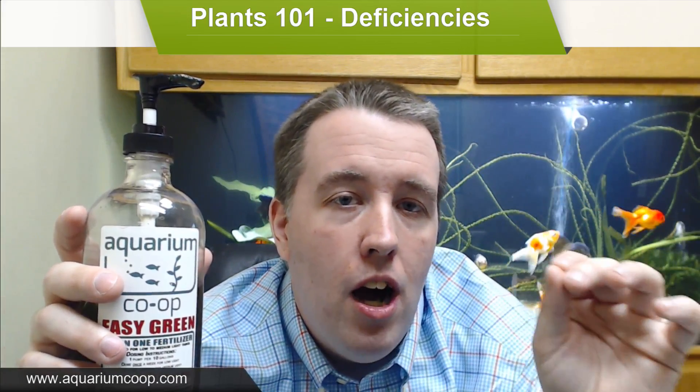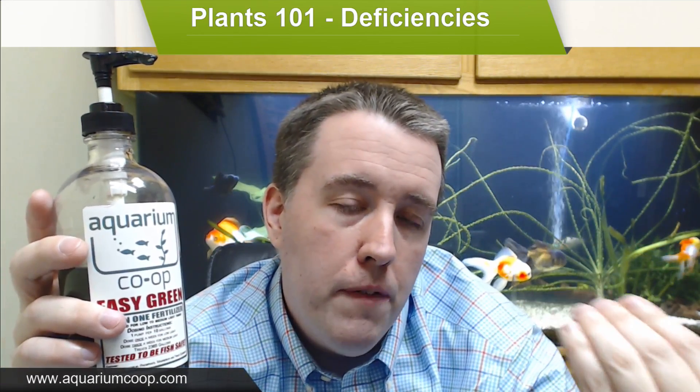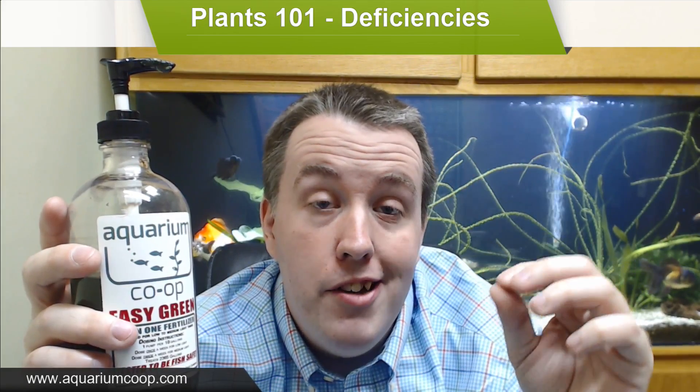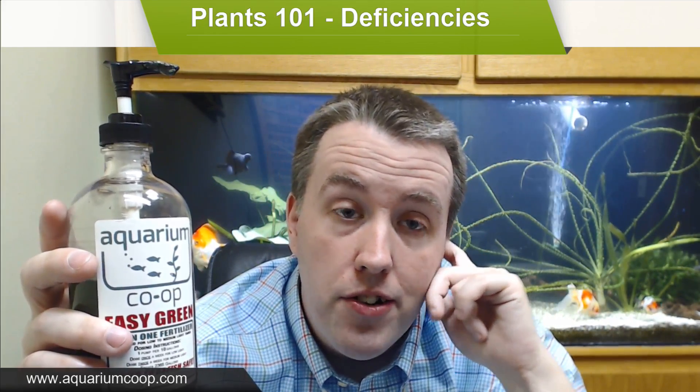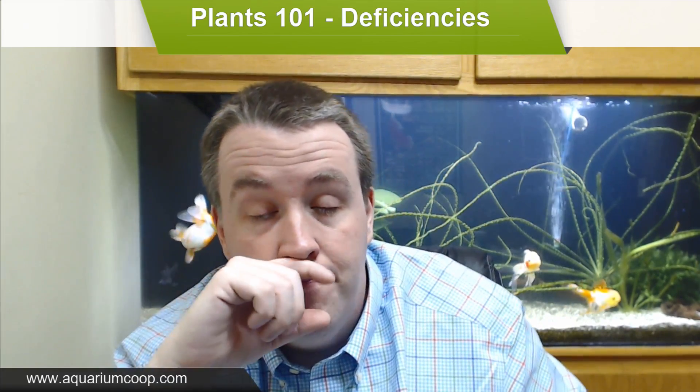Nitrogen deficiency is one of the most common issues people run into. The best approach is to try to match what you think the plant growth is to the amount of fertilizer. When you start seeing plants yellowing a little bit, it's most likely a nitrogen deficiency and you can correct it with more fertilizer. Also, if it's a heavy root-feeding plant — and if you don't know the difference between root feeding and water column feeding, check out the tutorial on plants — it relies on either an enriched substrate or root tabs, or a combination. When it exhausts those, it's going to exhibit the same symptoms.